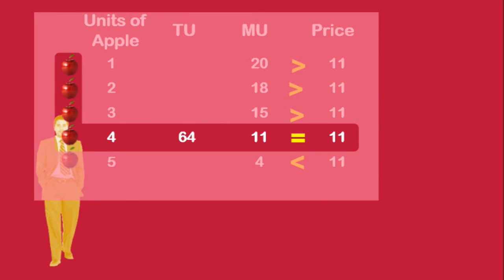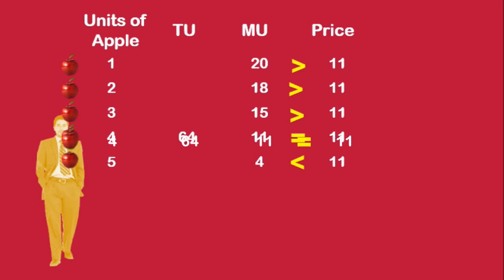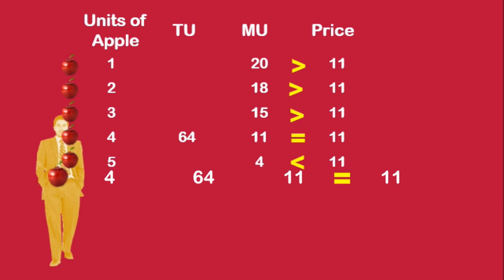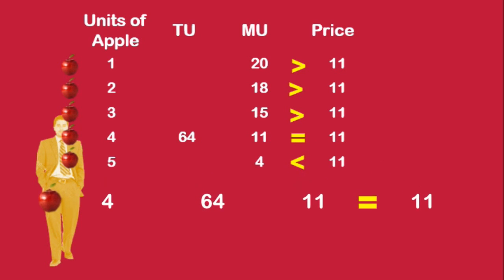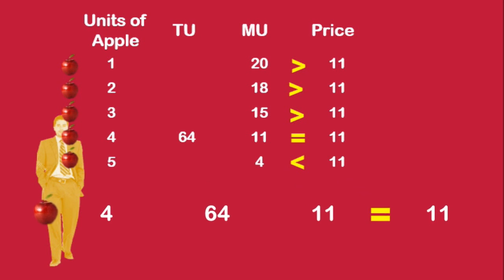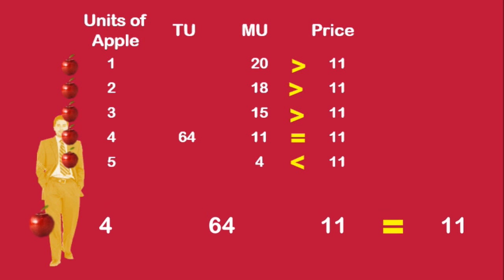You shall understand consumer equilibrium like this also. At equilibrium, the price the consumer is willing to pay — that is, marginal utility — is equal to the actual price of the apple. It is valuable.